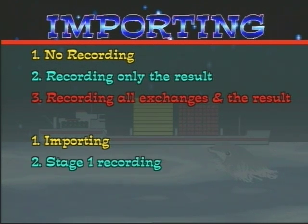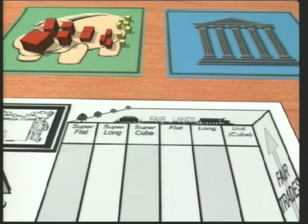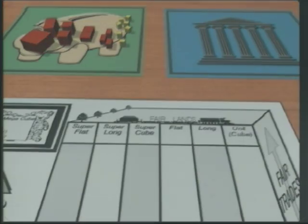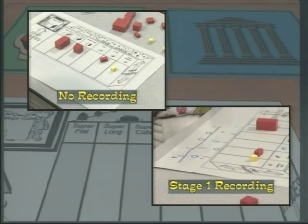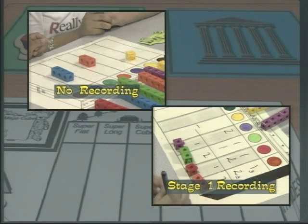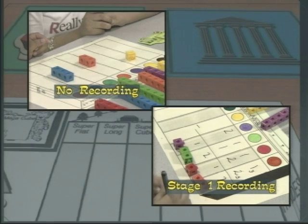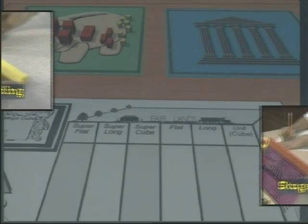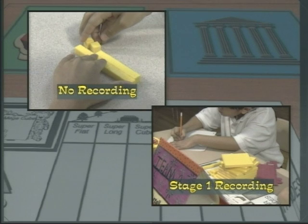The first is simply called importing, the second with stage one recording, the third with stage two recording. Students begin by importing Fairlands blocks in two-land and three-land with no recording, and then with stage one recording. They then abstract to importing using counters like multi-links, snap cubes, or unifix cubes in two-land, three-land, and other lands like four-land or five-land, with no recording and then stage one recording. They also import using base ten blocks in ten-land with no recording, then stage one recording.